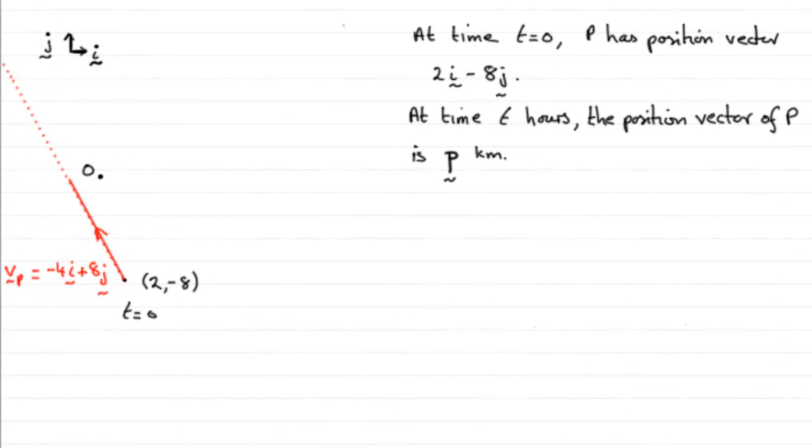Now for this part of the question, I've just drawn a sketch to illustrate what we're given. We're told that at time t equals 0, p has a position vector 2i minus 8j,